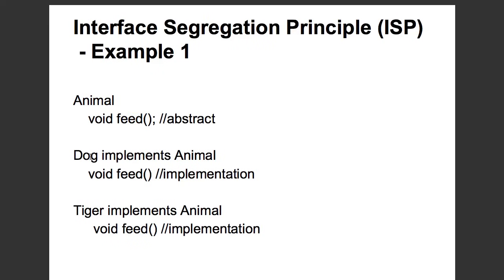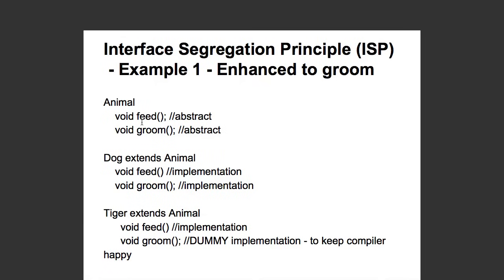Let's say I have an animal interface which is having an abstract feed method. We are creating two classes dog and tiger that implement the feed method. Let's say now I would need to add a feature to groom. What would happen if I add the groom method to the animal interface?